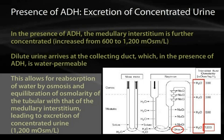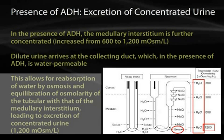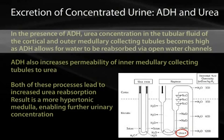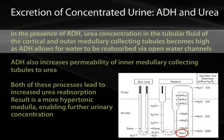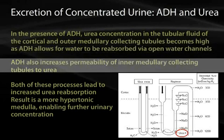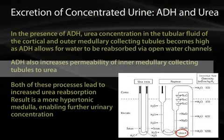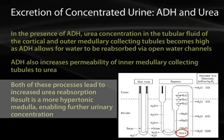How the interstitium becomes more concentrated is through urea transport. In the presence of ADH, urea concentration in the tubular fluid of the cortical and outer medullary collecting tubules becomes high as ADH allows water to be reabsorbed through open water channels. ADH also stimulates the production of specific urea transporters, increasing the permeability of the collecting tubules to urea. Urea is then reabsorbed from the tubules into the interstitium, leading to a more hypertonic medulla which enables further urinary concentration and water reabsorption.